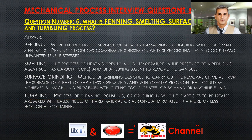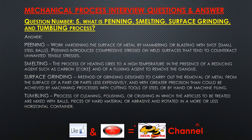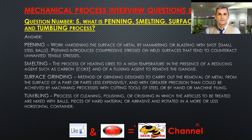Smelting: the process of heating ores to a high temperature in the presence of a reducing agent such as carbon or coke, and of a fluxing agent to remove the gangue. Surface grinding: a method of grinding designed to carry out the removal of metal from the surface of a part less expensively and with greater precision than could be achieved by machining processes with cutting tools or by hand or machine filing. Tumbling: a process of cleaning, polishing, or crushing in which the articles to be treated are mixed with balls, pieces of hard material or abrasive, and rotated in a more or less horizontal container.